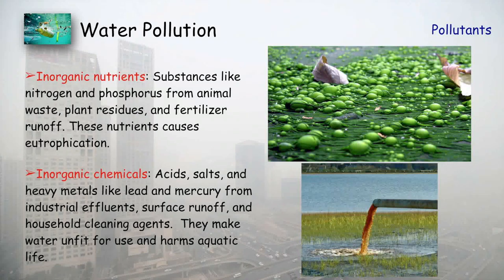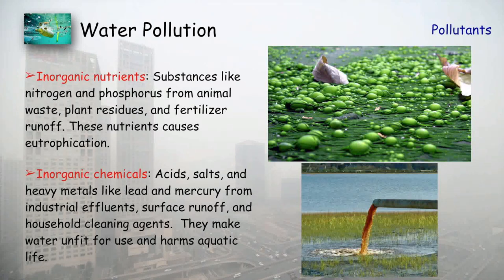Inorganic nutrients — substances like nitrogen and phosphorus from animal waste, plant residue, and fertilizer runoff — enter nearby water bodies and are the main causes of eutrophication. Inorganic chemicals like acids, salts, and heavy metals such as lead and mercury from industrial effluents, surface runoff, and household cleaning agents also enter water bodies, making them unfit for aquatic life and drinking purposes.